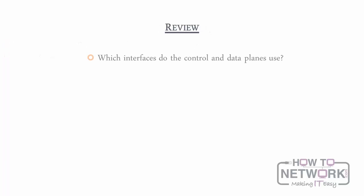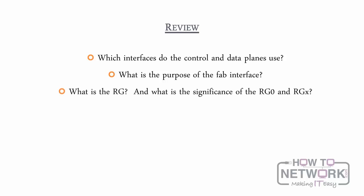Which interfaces do the control and data planes use? The control plane of the chassis cluster uses SPC ports on high-end systems and revenue ports on branch platforms, and is named FXP1. The data plane connects using physical ports named FAB0 and FAB1. What is the purpose of the FAB interface? The FAB interface serves as the data plane link between nodes in a chassis cluster and transmits RTOs to replicate session states between the two nodes. What is an RG and what is the significance of RG0 and RGX? An RG is an abstract entity that manages the redundancy of a group of objects. The software creates RG0 when a chassis cluster forms to manage primacy of routing engines, and uses RGX to manage primacy of Wreath interfaces.